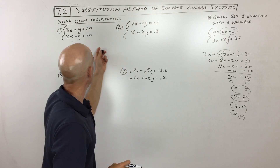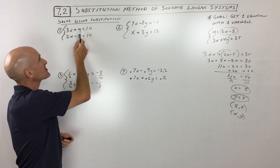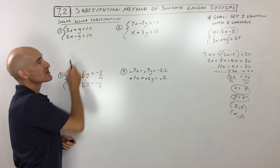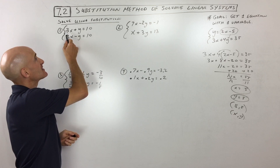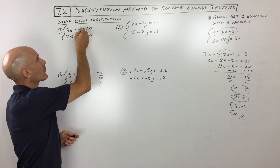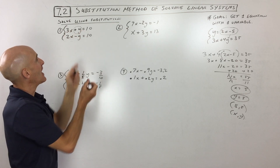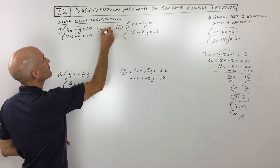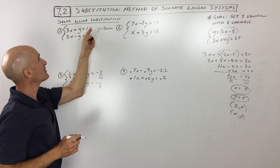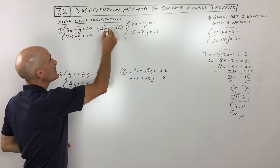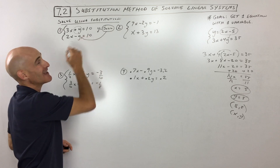We're going to do some examples. For number 1, what variable do you think is easiest to get by itself — this x, this y, this x, or this y? Well, if you said this x, see, this is a little tricky because there's 3x here. I would go for this y right here because, number 1, it's positive, plus there's only one of them. So I'm going to subtract 3x from both sides, and I get y equals negative 3x plus 10.